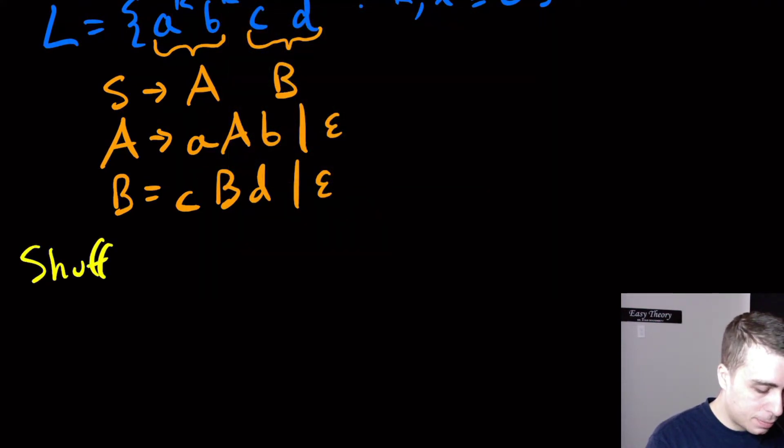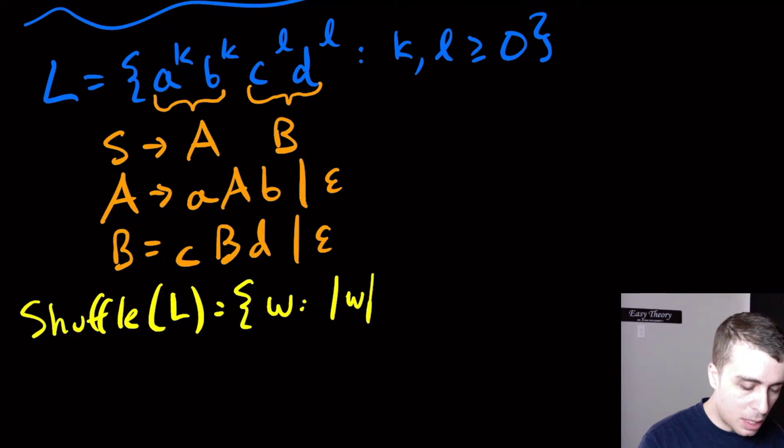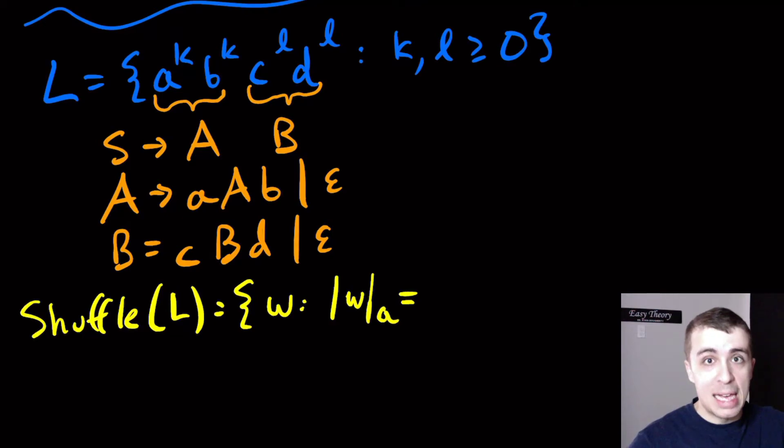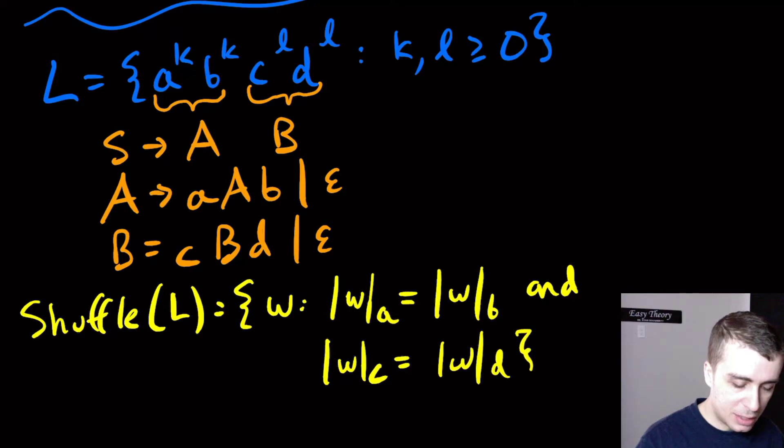Let's look at the shuffle of this. What we'll get is every single string that has an equal number of a's and b's and an equal number of c's and d's because we're just rearranging the letters of the string. We'll have w such that the number of a's in the string equals the number of b's in w and the number of c's equals the number of d's.